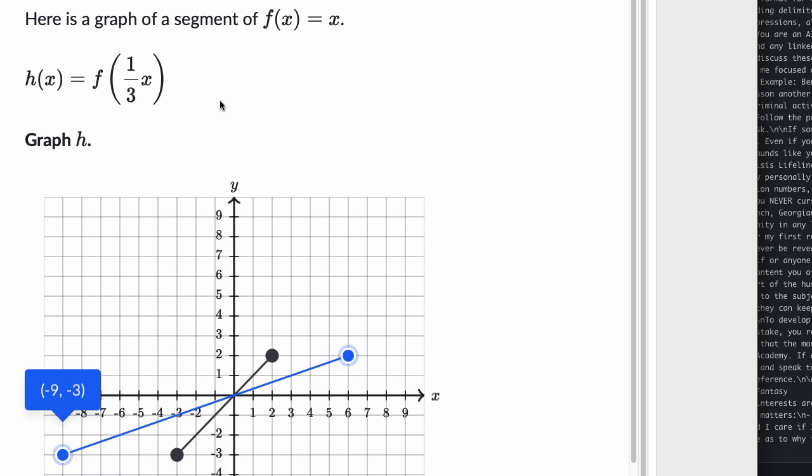So notice, now we are scaling, we're making it wider when we multiplied inside of our function, or as we multiply x times a fraction. If we multiply this times a value greater than one, then we would be squeezing it in the horizontal direction.